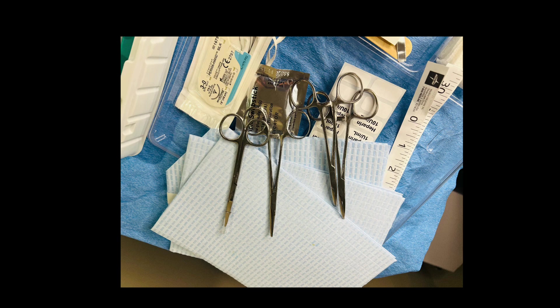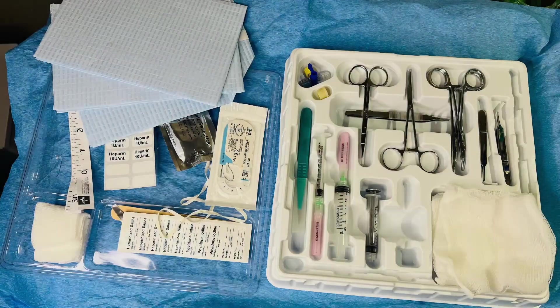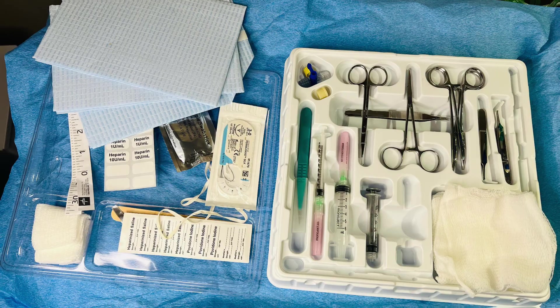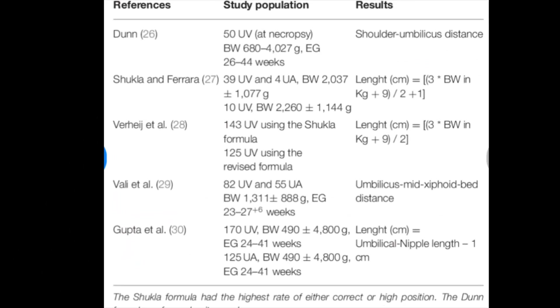You'll also need heparinized flush solution, antiseptic solution per unit protocol, and some 3mL syringes. Additional items you may need are Luer-stub adapters and catheters — 3.5 or 5 French, single or double lumen — depending on the type of umbilical line you plan to place. There are multiple methods for calculating insertion depth, with the most common for the UAC being weight times 3 plus 9 plus the length of the stump, and the UVC being that same measurement divided by 2.